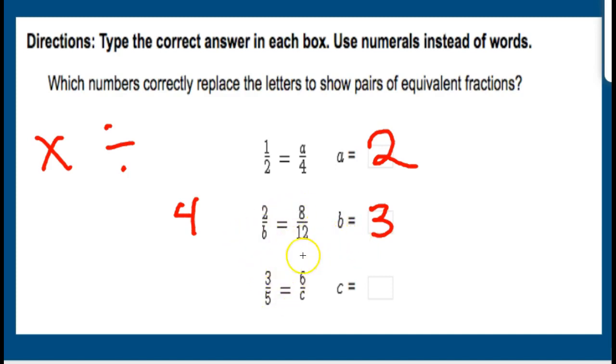Alright, now let's look here. We have 3/5 equals to 6 over c. This is growing here. So I'm going to look 3 times what equals 6? Well, I know that's 3 times 2. So 5 times 2 equals 10. So 3/5 is equivalent to 6/10.